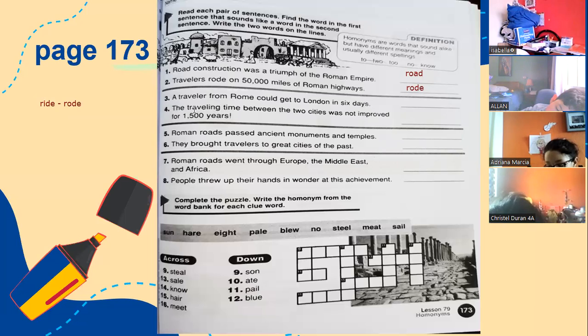Next one: a traveler from Rome could get to London in six days. The traveling time between the two was not improved for about 1500 years. Which one? Two and to. Next one: Roman roads passed Asian monuments and temples. They brought travelers to great cities in the past. What are the two words?